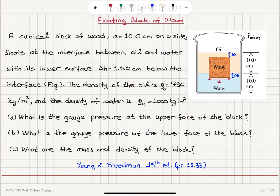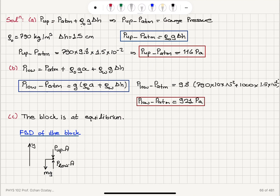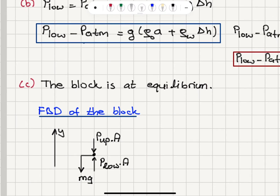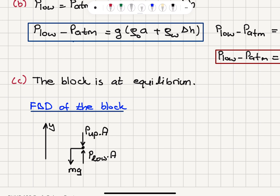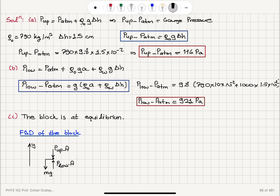Part C: What are the mass and density of the block? The block is at equilibrium. Drawing the free body diagram, we have a force at the upper interface P_up times A, a force at the lower interface P_low times A, and the weight Mg. Under the influence of these three forces the block is at equilibrium, and the two pressure forces together give us the buoyant force.